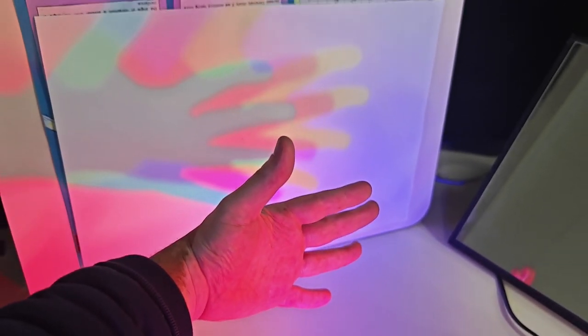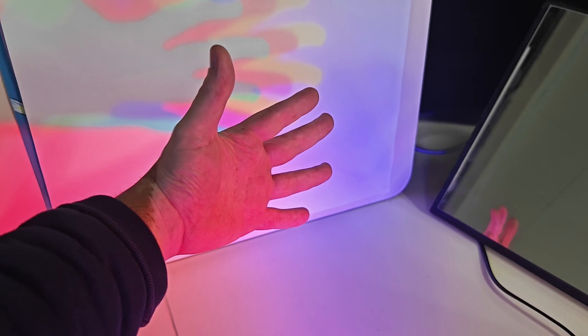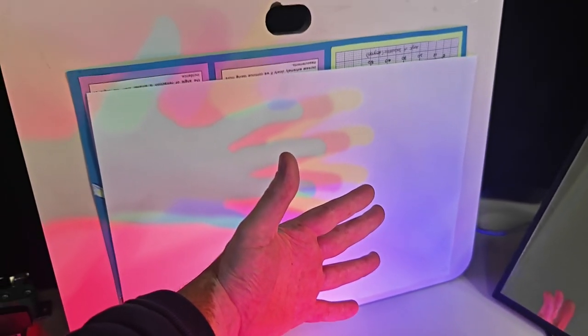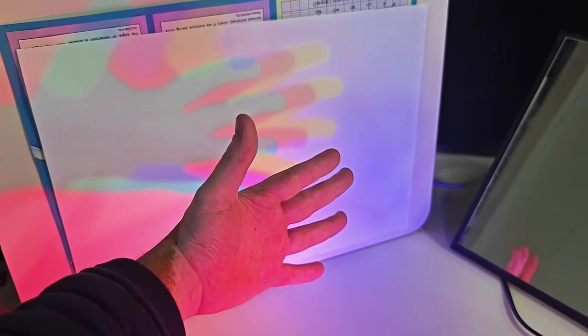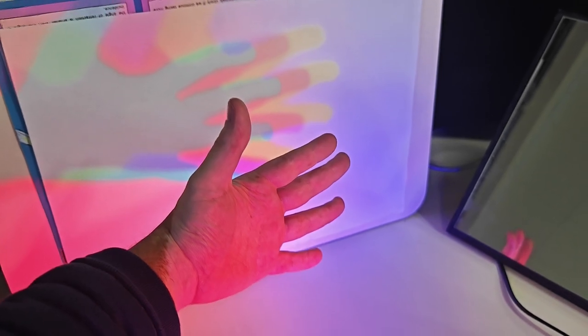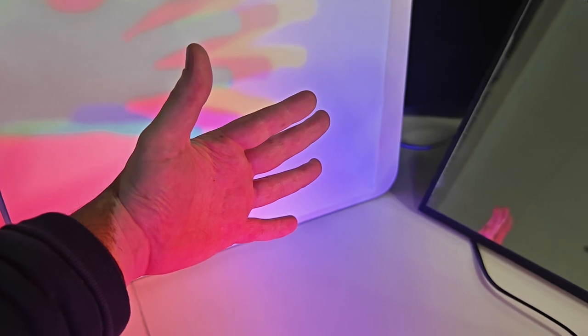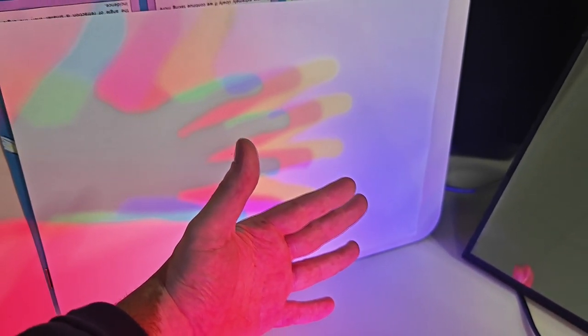We've got different angles of absorption. The lights that are going through my hand are being projected and the lights that are being blocked by my hand are shadowed. And we've got reflection from the white surface.